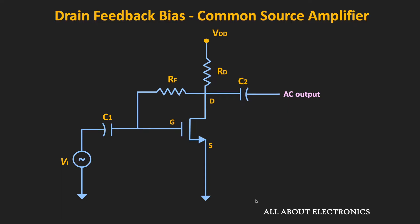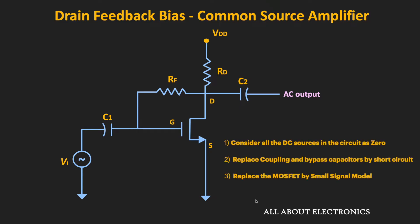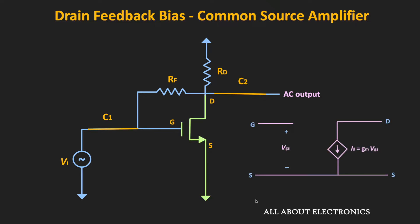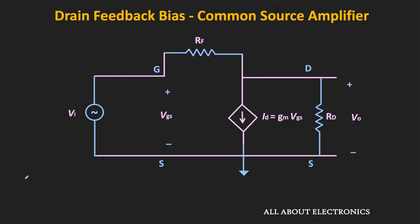For the small signal analysis, we will follow the same procedure: first consider all DC sources in the circuit as zero, then replace all coupling and bypass capacitors by short circuits, and then replace the MOSFET by the small signal model. Here, the input appears between the gate and the source terminal, and the source terminal is grounded. The feedback resistor appears between the drain and the ground terminal, and the drain resistor RD also appears between the drain and the ground — effectively between drain and source. The equivalent circuit looks like this.